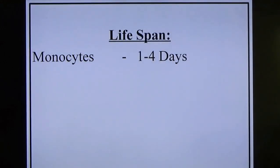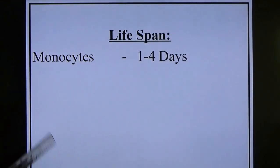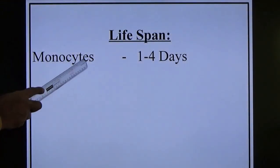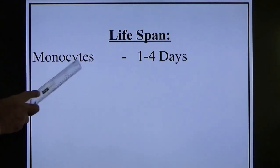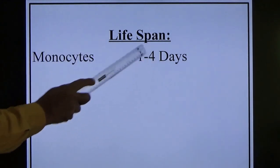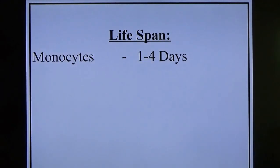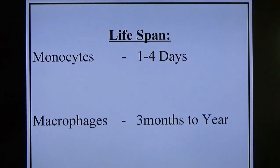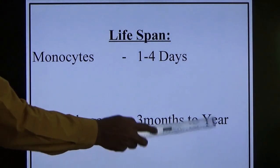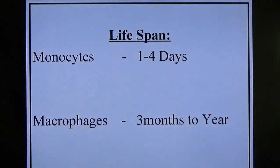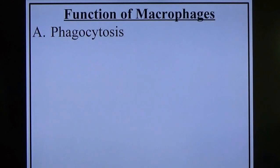What is the lifespan? When present in the blood as monocyte, the lifespan is one to four days. When it becomes macrophage in tissue, the lifespan is three months to a year.